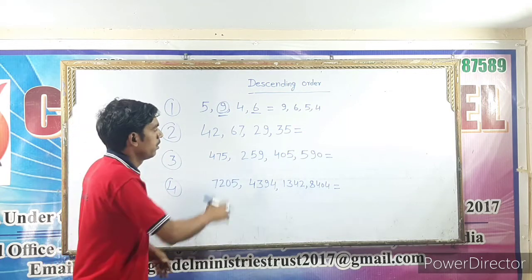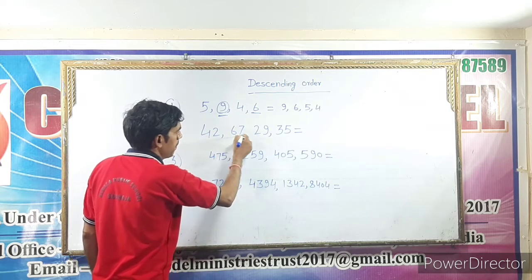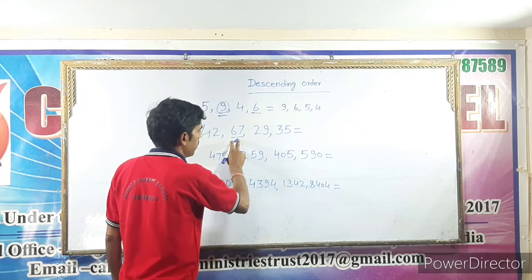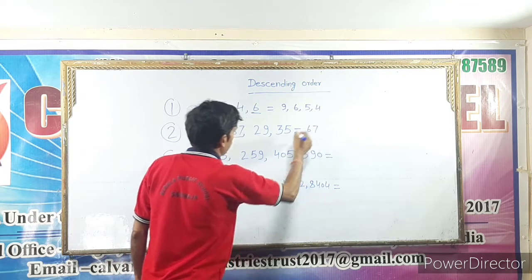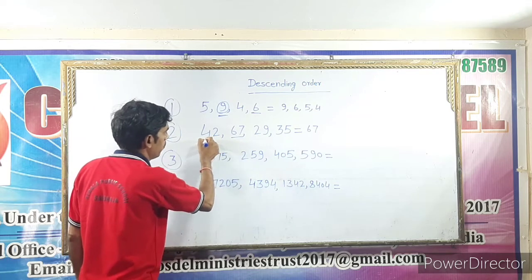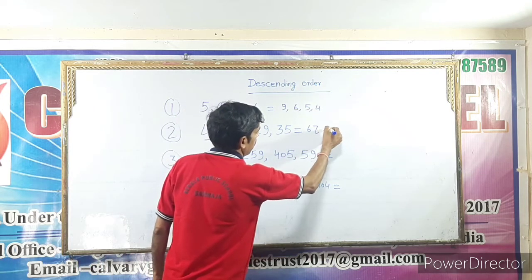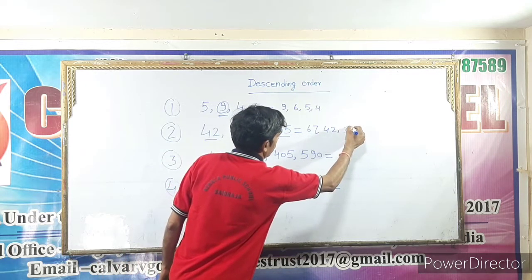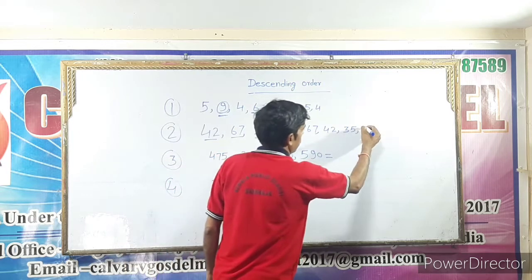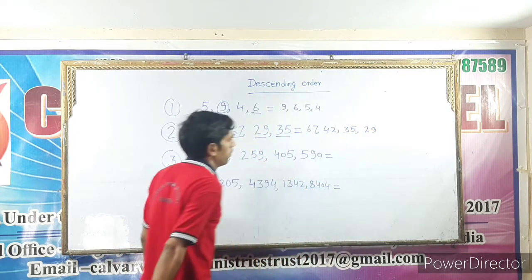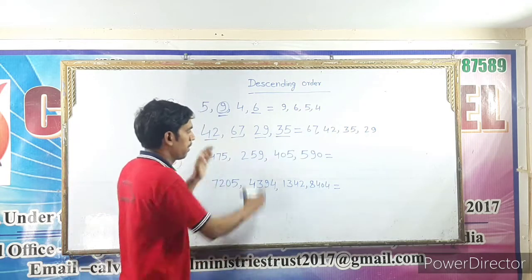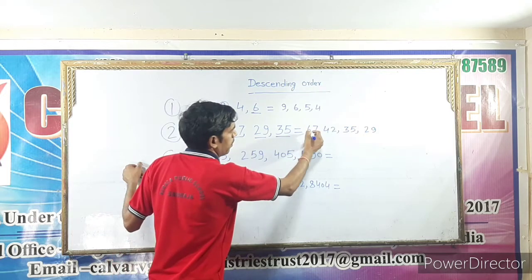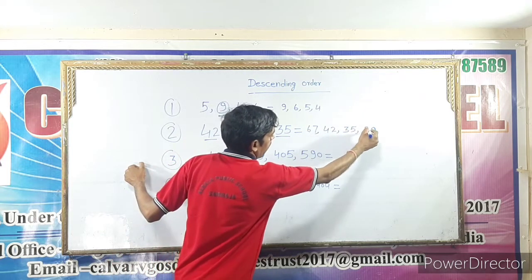From these numbers, the greatest number is 67. Next is 42. Next is 35. And last is 29. So in descending order: 67, 42, 35, and 29.